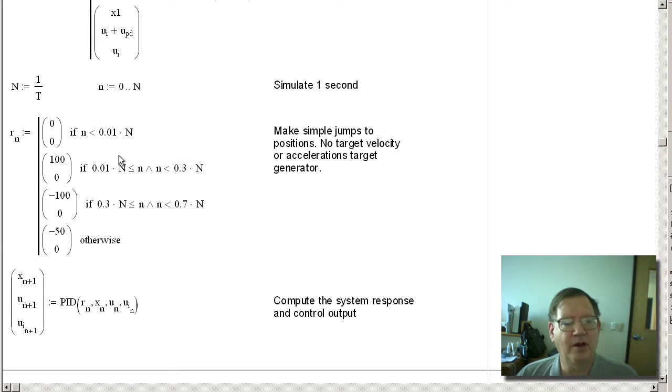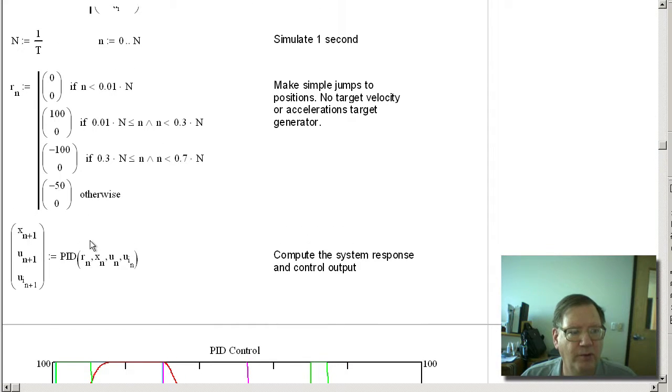To start with, I'm going to do some simple step changes. And this way I can prove that the response is critically damped. It will not overshoot the set point. And we're going to do what looks like 1,000 iterations.